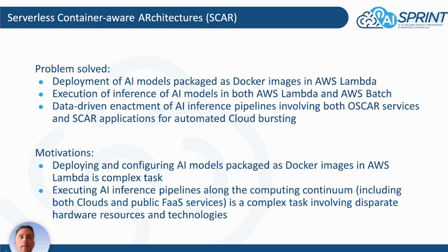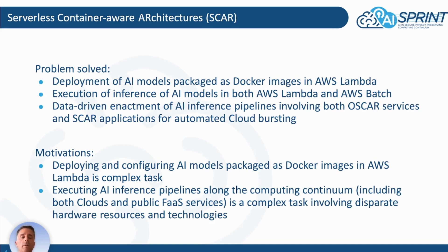AWS Lambda provides the ability to have scalable function invocations, up to 3000 parallel invocations. AWS Batch provides the ability to deploy elastic clusters on AWS that can grow and shrink depending on the number of jobs, even with GPU support.